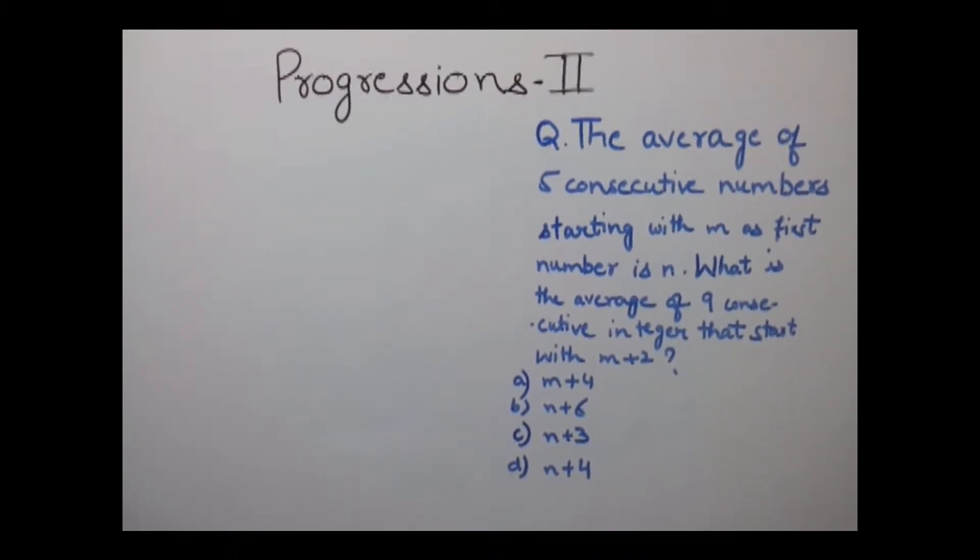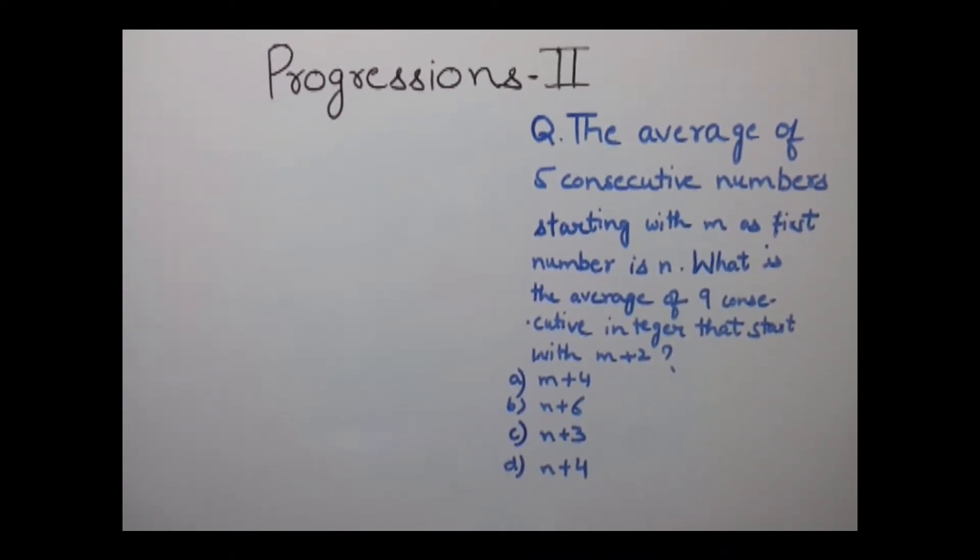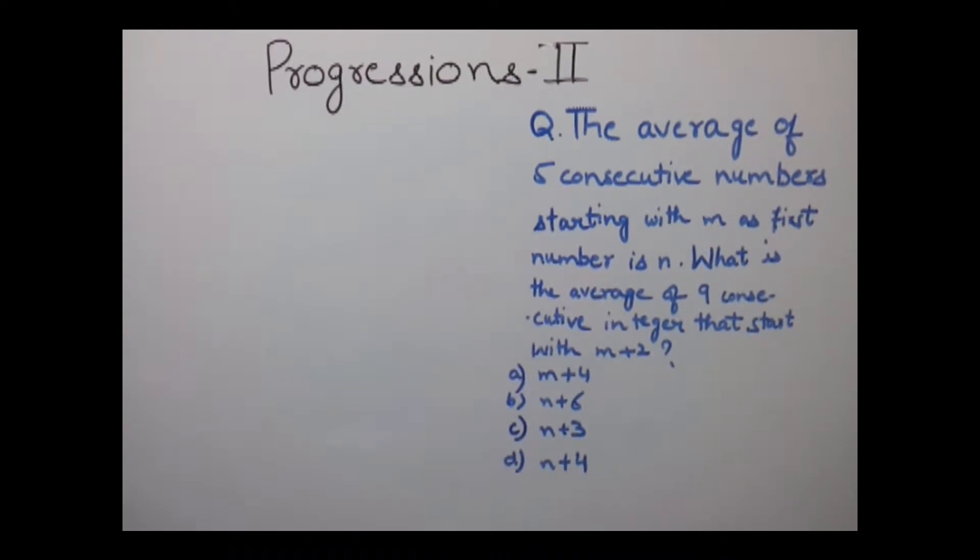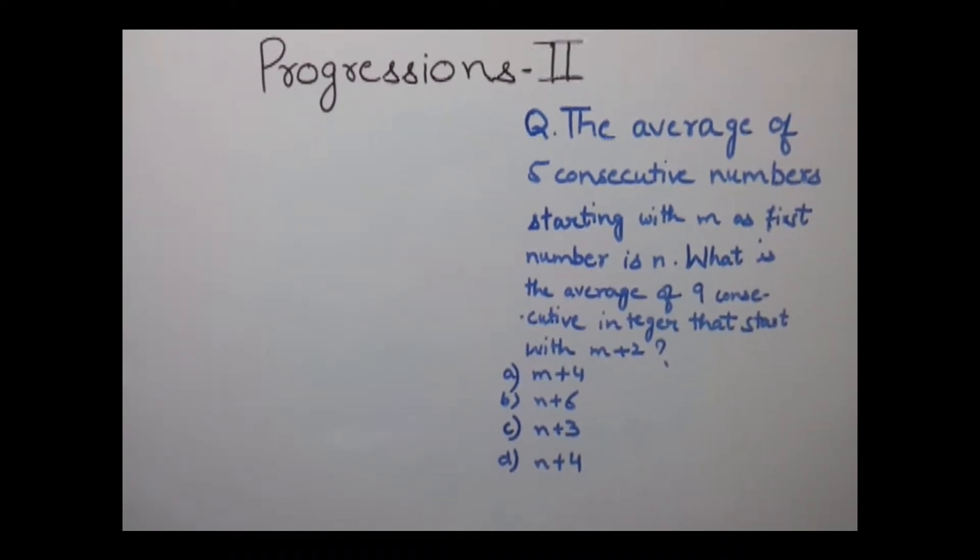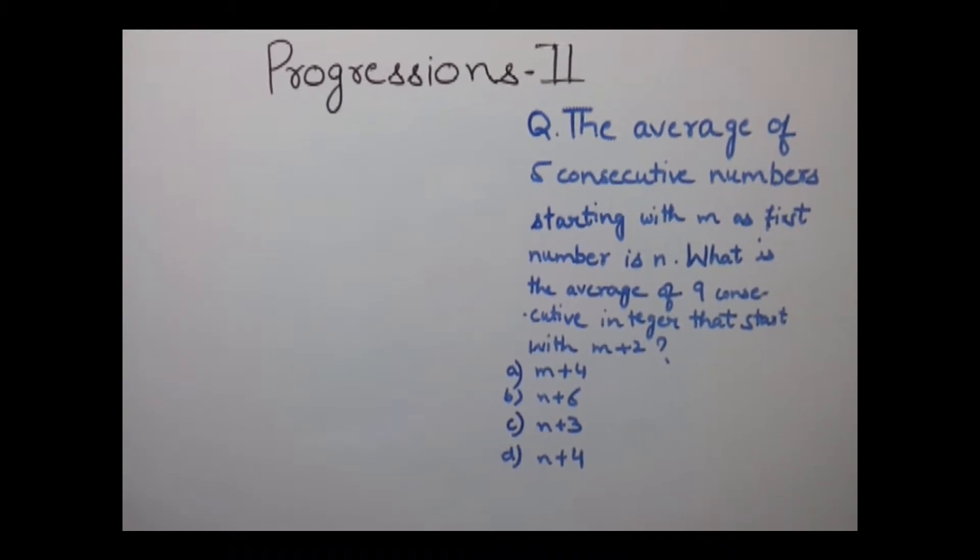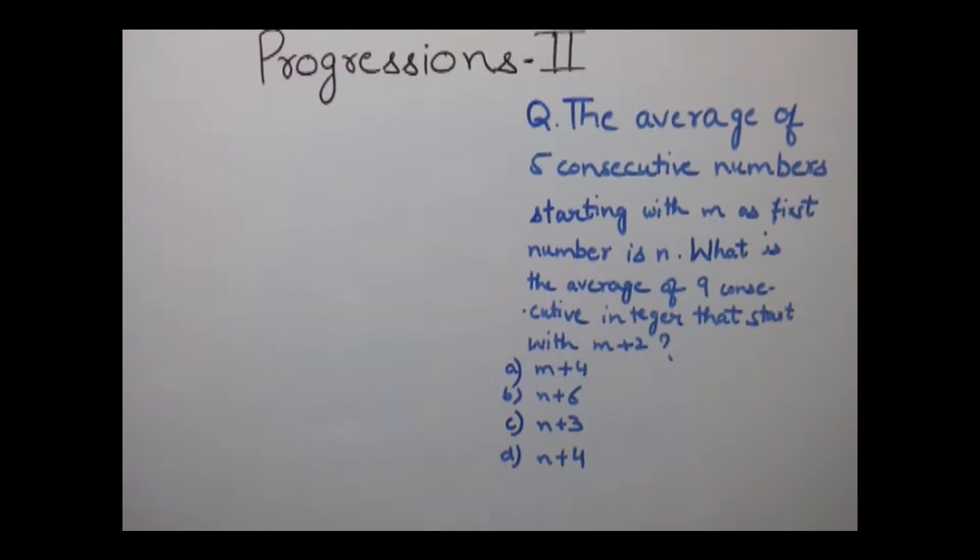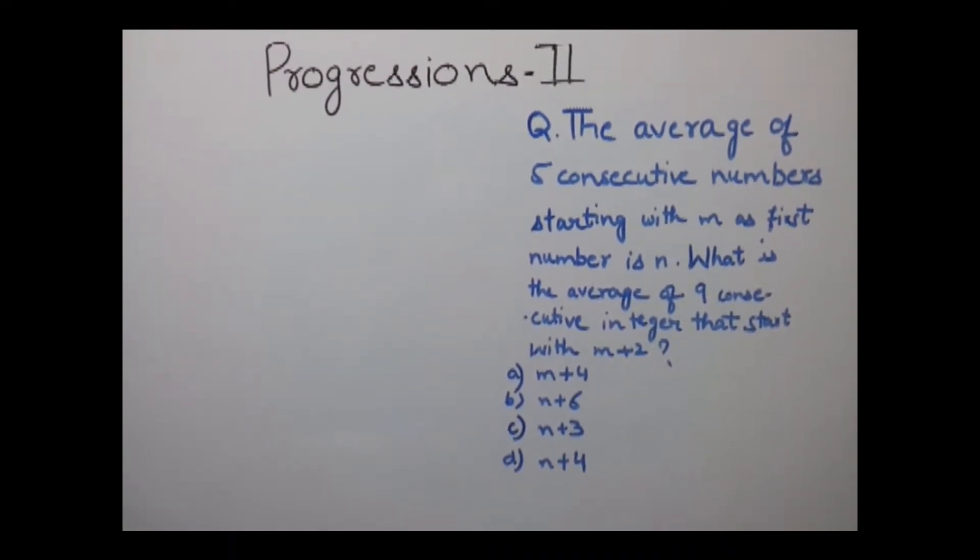The example here is: the average of 5 consecutive numbers starting with m as first number is n. What is the average of 9 consecutive integers that start with m+2? Here it's been given that there are 5 consecutive numbers starting with m.